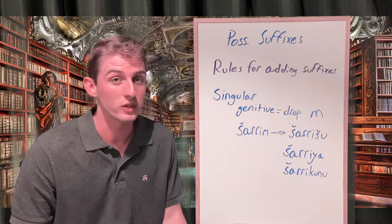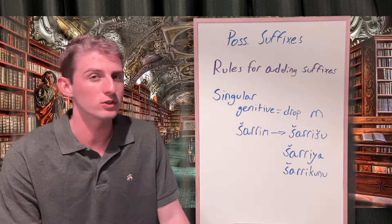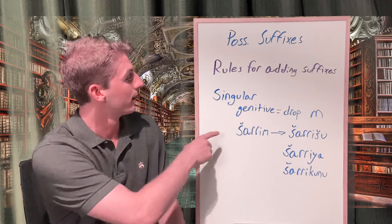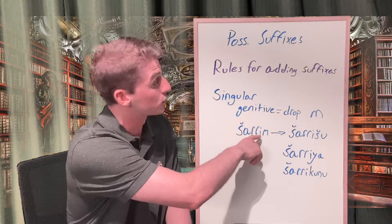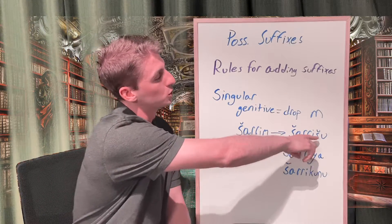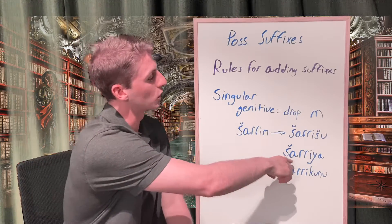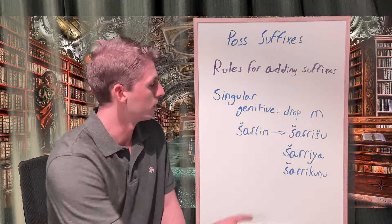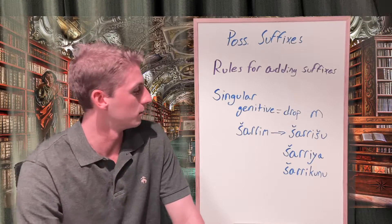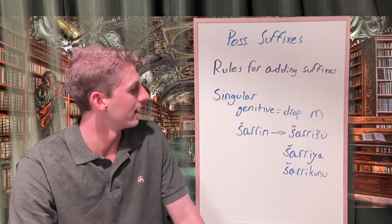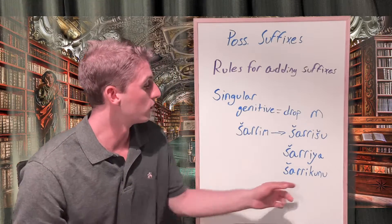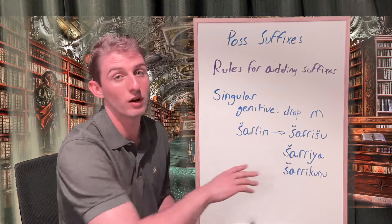With possessive suffixes, there are a few rules governing how they are added to nouns. First, for singular nouns in the genitive case, the 'im' memation is simply dropped off, leaving a short 'i.' So 'šarrim' meaning 'king' in the genitive becomes 'šarrišu' meaning 'his king,' or 'šarriya' for 'my king,' or 'šarrikunu' for 'y'all's king.' Note that although vowel elision would normally apply to two adjacent short vowels, the rule does not apply within possessive suffixes, so 'šarrikunu' appears in its full form.